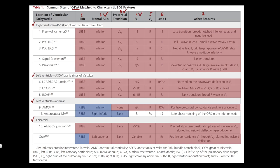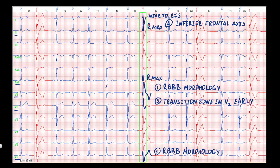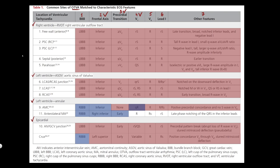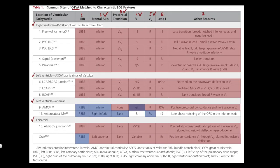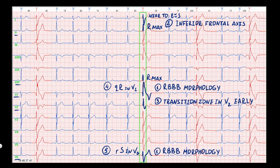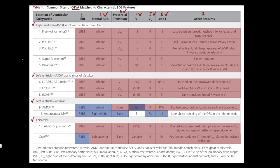The next step is QRS morphology in V1. In our example it is QR morphology, which is suitable for aorto-mitral continuity. Now let's check the QRS in V6 — here it is represented by RS waves, which is more suitable for anterolateral mitral annulus. Next, evaluation of the first standard lead shows RS morphology, which is also more suitable for anterolateral mitral annulus.